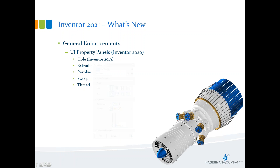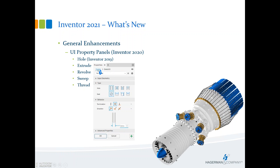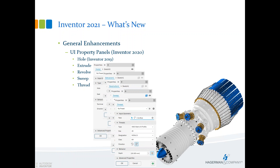In 2019, the hole command moved from the dialog box to a UI panel, allowing seamless toggling between sketch and feature edits without leaving the command. Inventor 2020 brought the extrude, revolve, sweep, and thread commands to UI panels. In extrude and revolve you can go back and modify sketch geometry without leaving the command, then click back to the feature and execute.